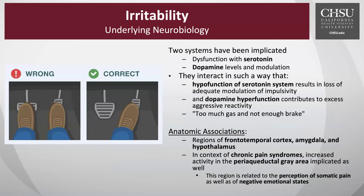Irritability can also be associated with chronic pain syndromes. In particular, we see increased activity in the periaqueductal gray area, and this region is related to the perception of somatic pain as well as negative emotional states. In one of my talks, I go into functional imaging — fMRI or SPECT scans — where we identify how negative emotional states like remorse, sadness, and grief light up in the brain the same ways that pain is registered.